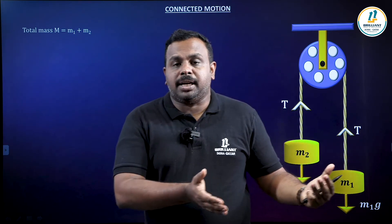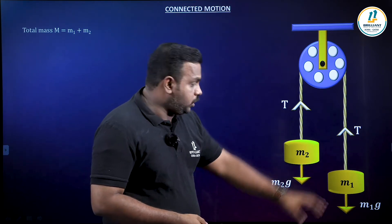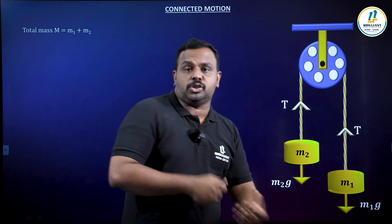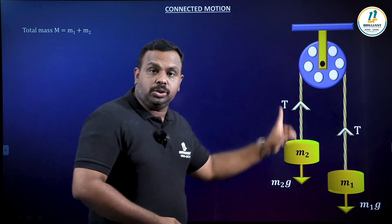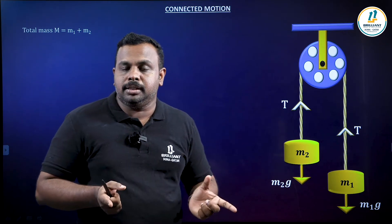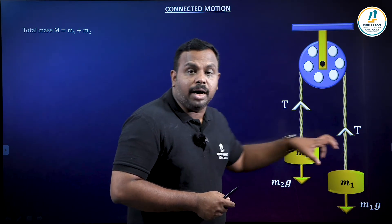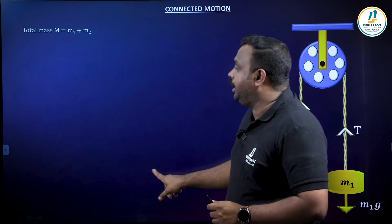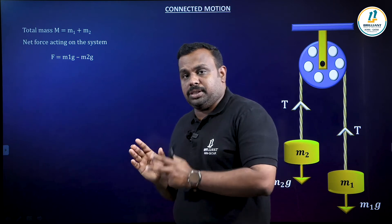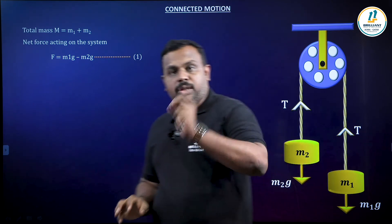If there are two forces acting in opposite directions, we subtract the smaller from the bigger to find the net force. Here M1g acts downward in the direction of motion, while M2g acts opposite to the direction of motion. Since M1g is greater than M2g, the net force is M1g minus M2g. Take this as equation number one.